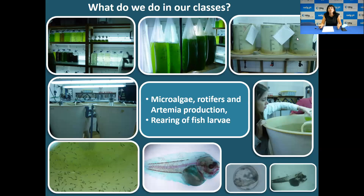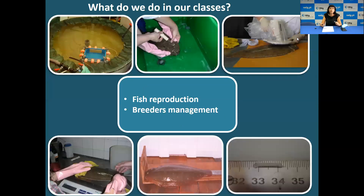A common question is: what do we actually do in class? In aquaculture, for example, we learn how to produce microalgae, rotifers and artemia. We also rear fish larvae and perform larval assays — there is a strong zootechnical component. We work on fish reproduction and breeders management. One species we frequently use is Senegalese sole, as many research groups at the university work with this fish.